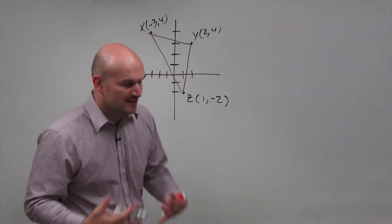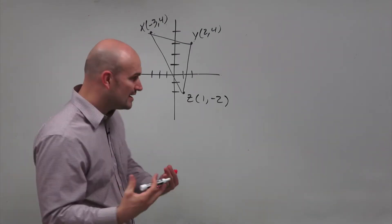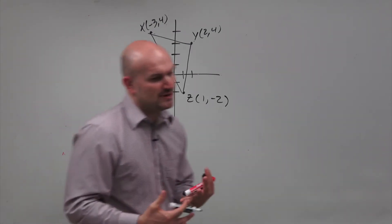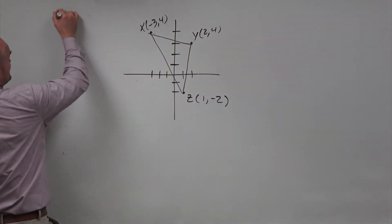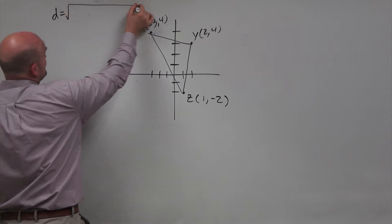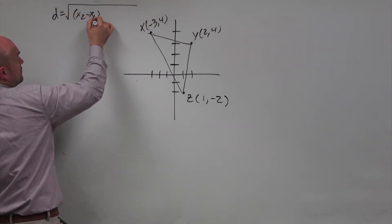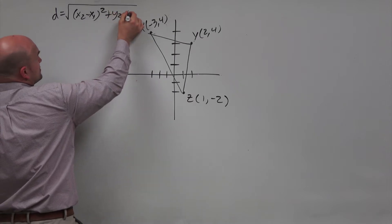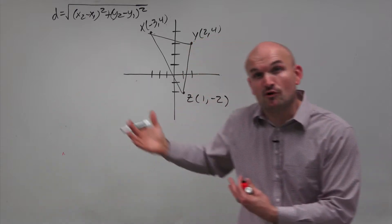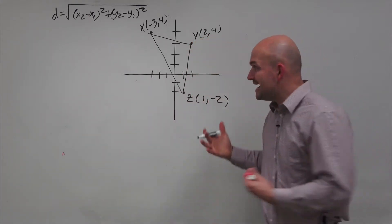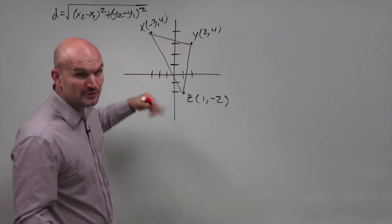Let's start with the perimeter, because typically it's helpful for identifying the area as well. It's usually something we start off with as far as finding the distance. Typically, we find the distance between any two points using the distance formula — x2 minus x1 quantity squared plus y2 minus y1 quantity squared, all under a square root. You could definitely use the distance formula to find the distance for all three of these sides.